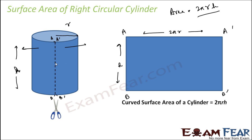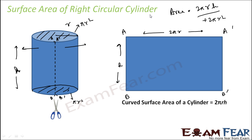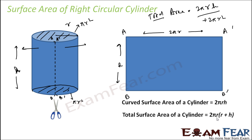But the cylinder not only has this curved surface area — it also has two circular planes at the top and bottom. When we talk about total surface area, we must include these two areas as well. The area of one circle is πr², so both circles contribute 2πr². Adding this to the curved surface area: total surface area = 2πr² + 2πrh = 2πr(r + h).